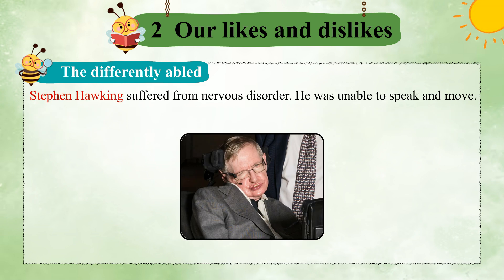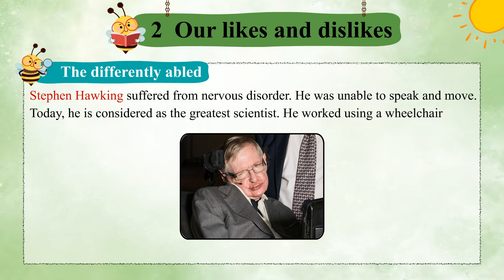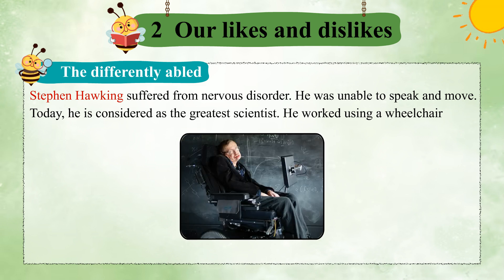Stephen Hawking suffered from a nervous disorder. He was unable to speak and move. Today, he is considered one of the greatest scientists. He moved around using a wheelchair equipped with a computer.